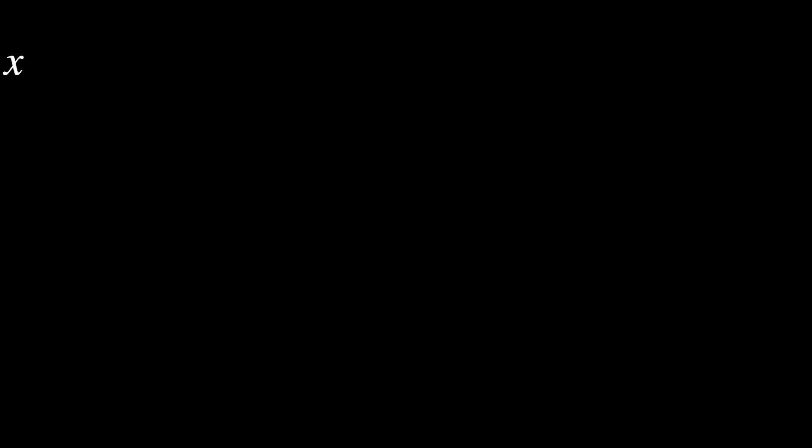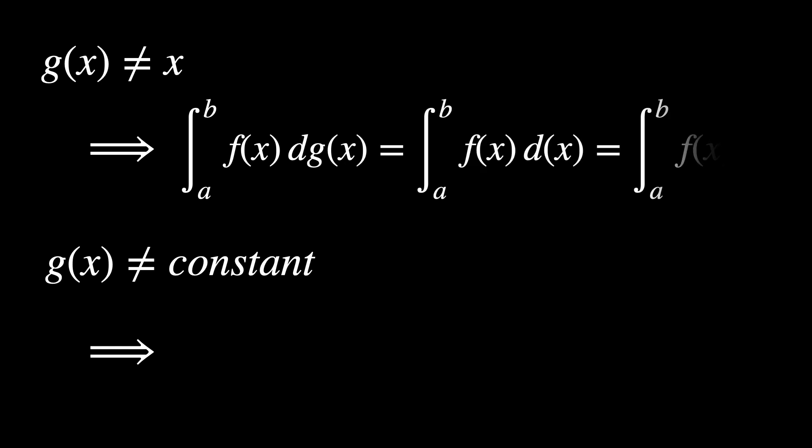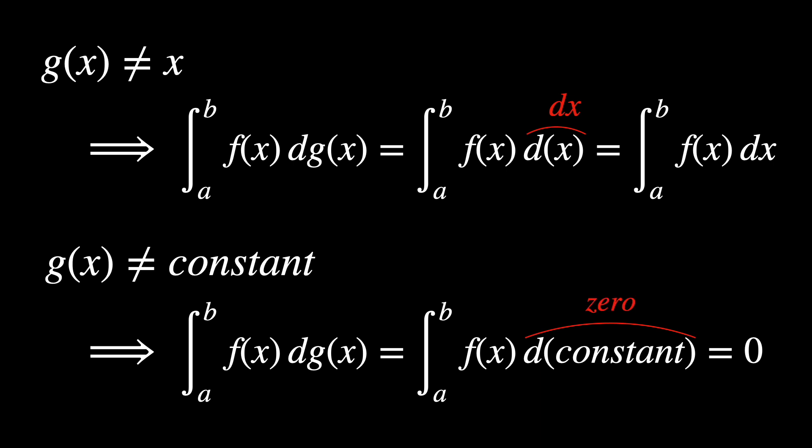Let's construct a simple example before defining it rigorously. We will choose two functions, f and g, such that g is not simply x or a constant. Otherwise, this example would reduce to the regular Riemann integral. In the case g is a constant, the integral is just zero.